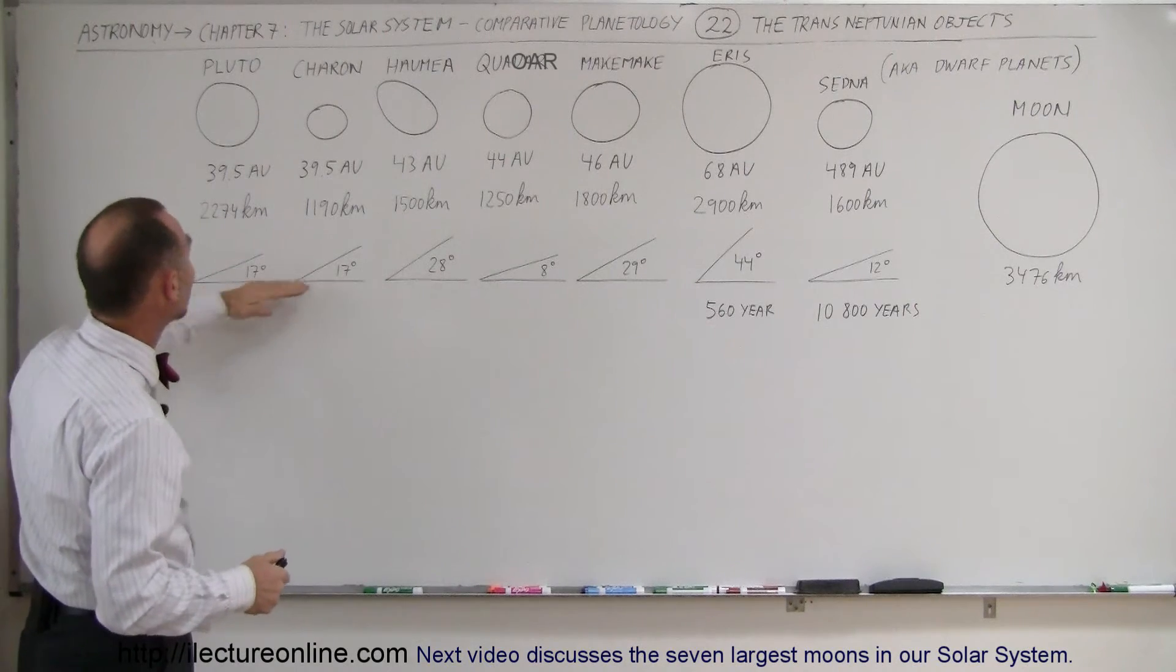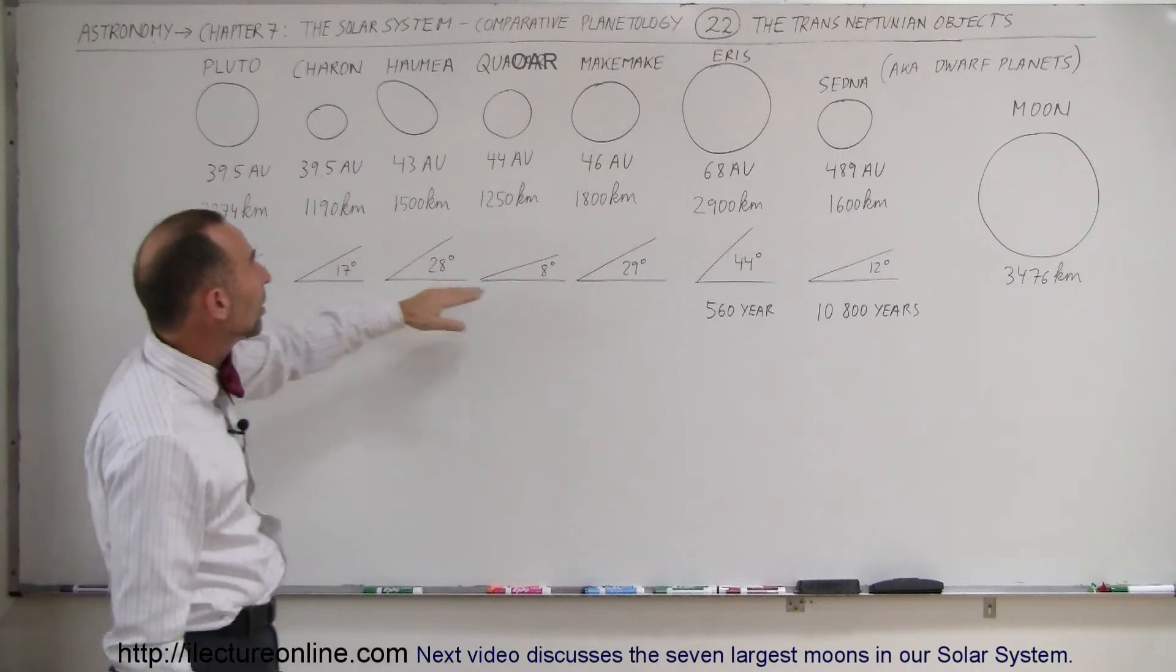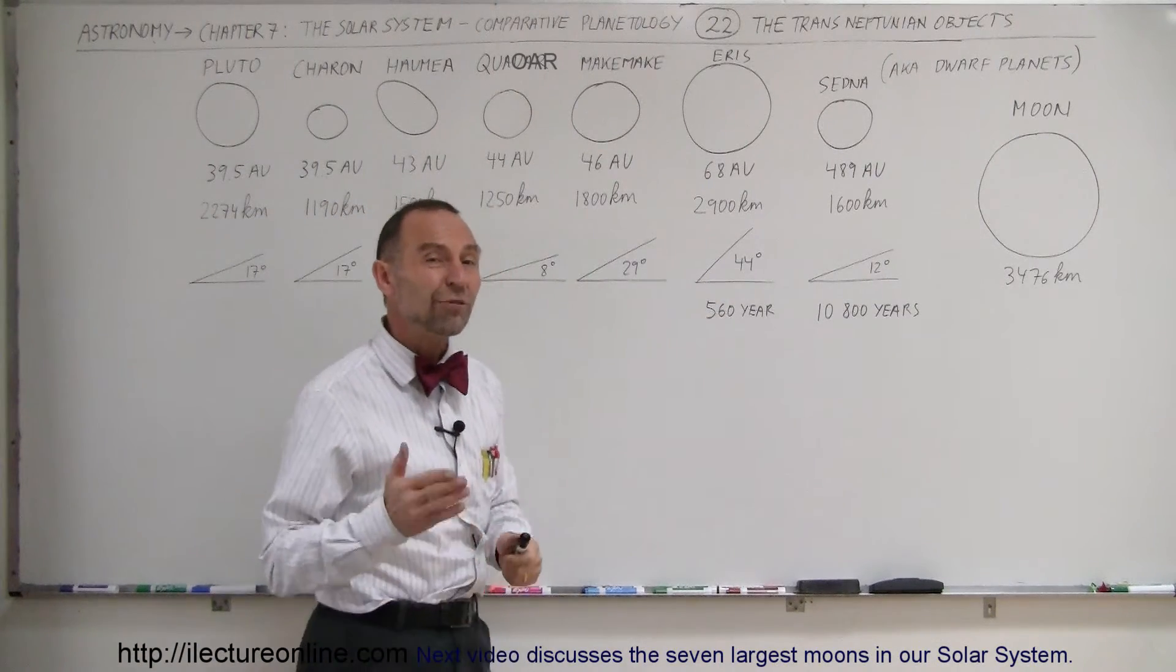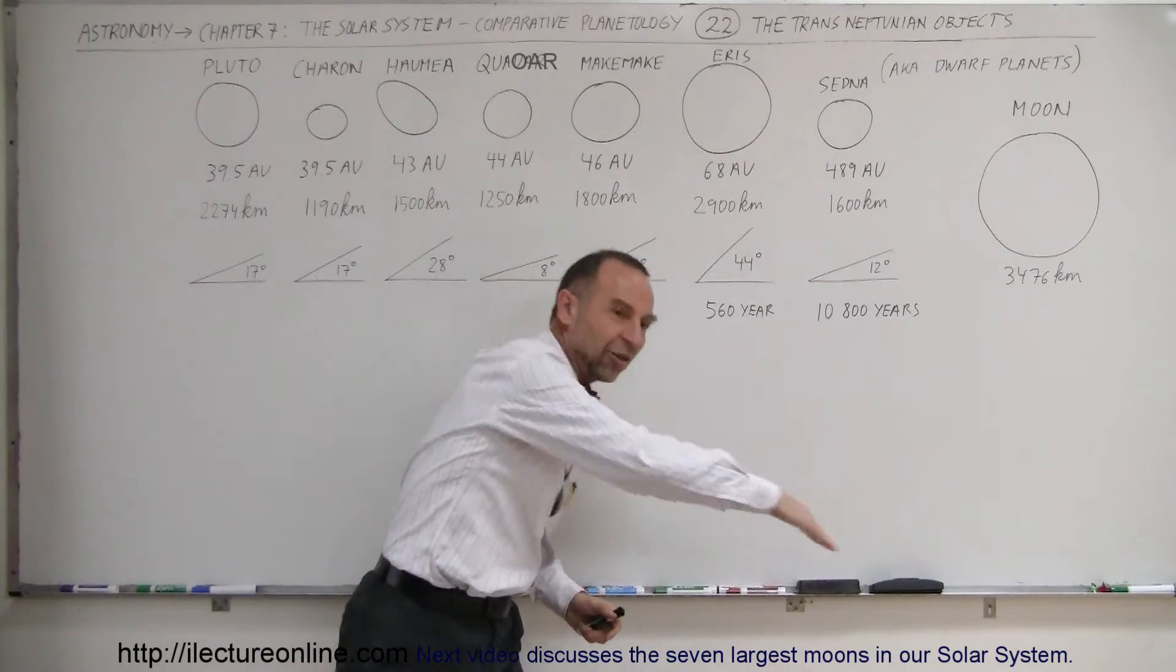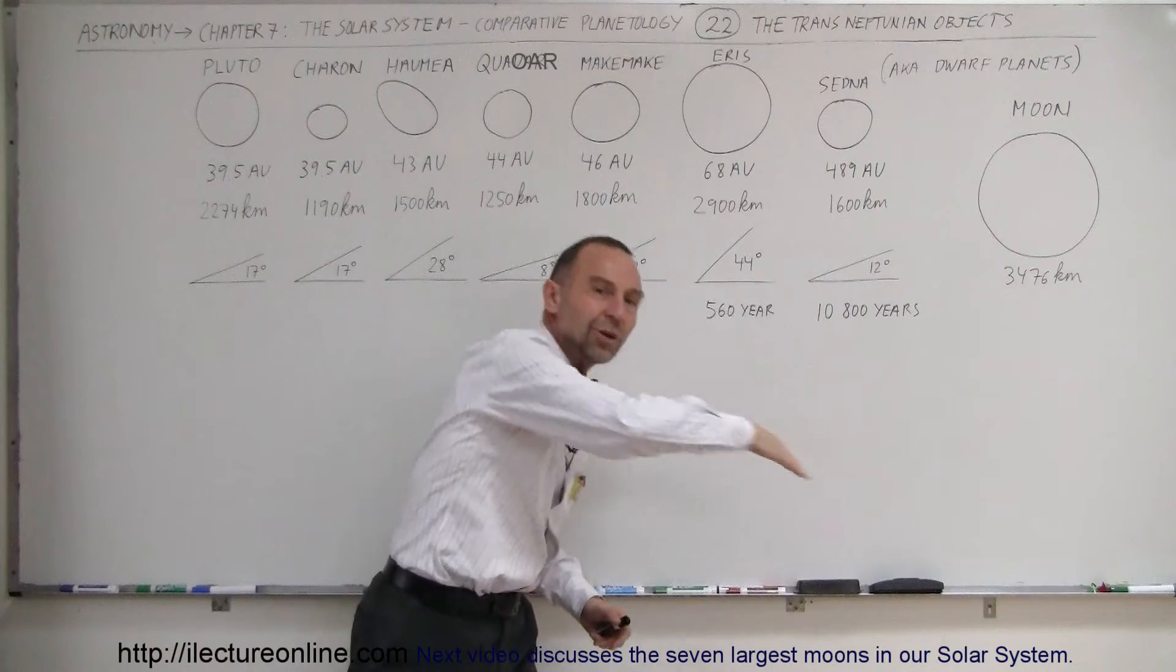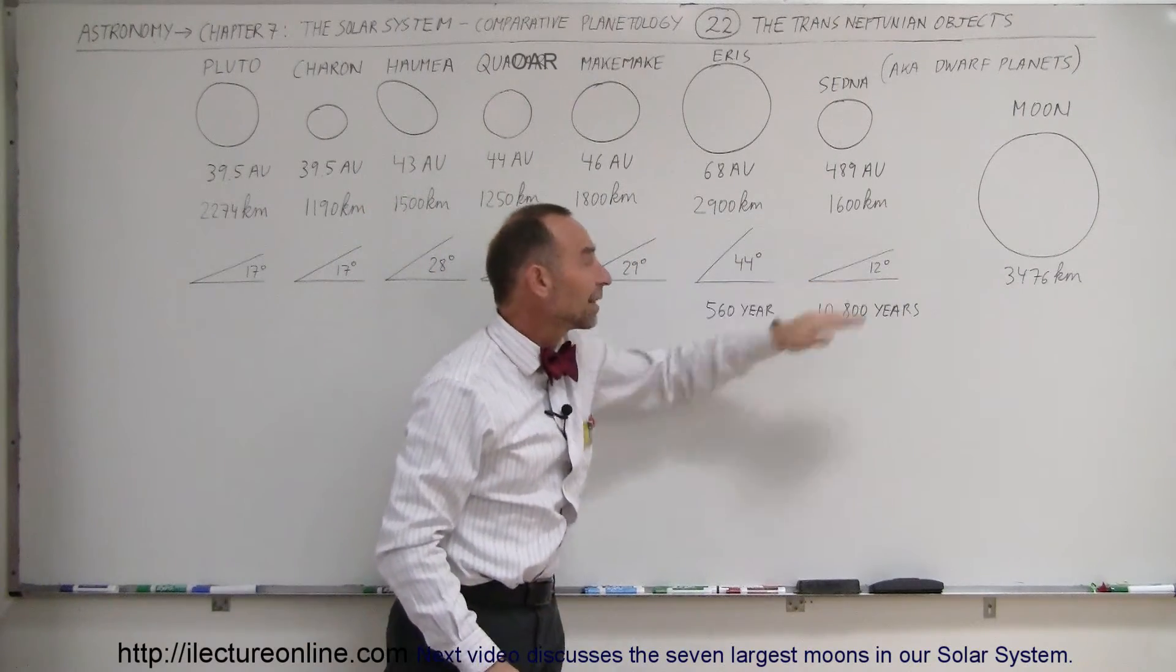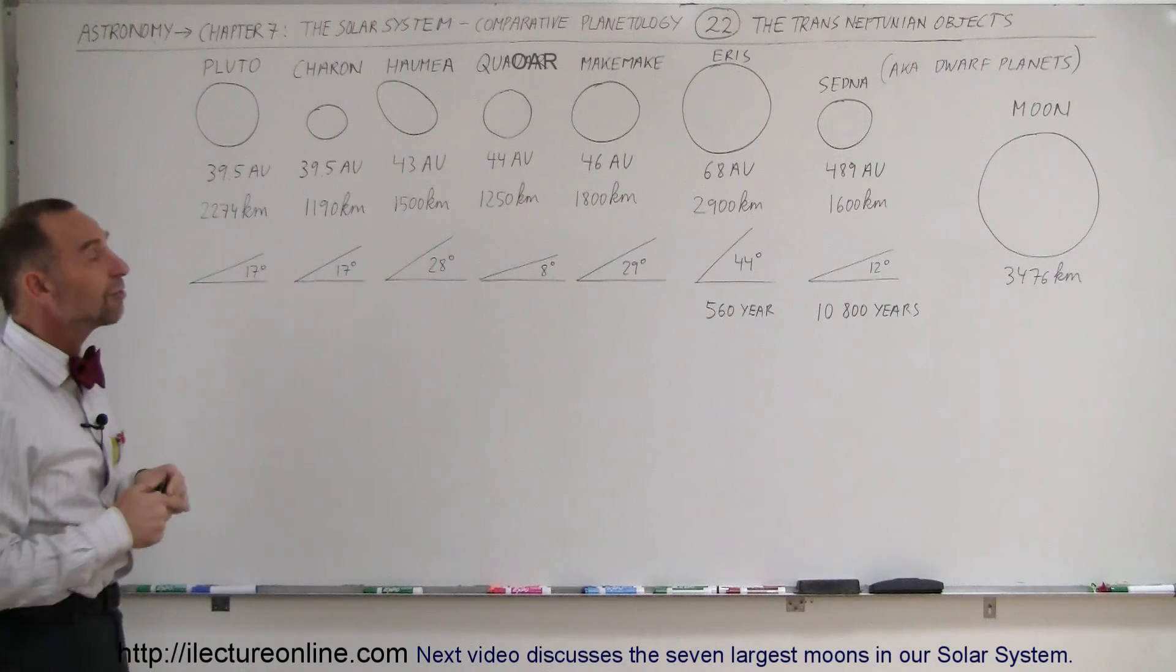Notice that Pluto and Charon have the same at 17 degrees. Haumea at 28 degrees. Makemake at 29 degrees. And Eris varies at 44 degrees. So when the ecliptic plane is like this, Eris goes around the sun at an angle of 44 degrees relative to the horizontal ecliptic. And then Sedna here is back down to 12 degrees. But all of them are quite a long distance away from the ecliptic.